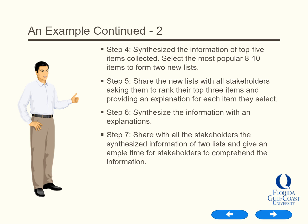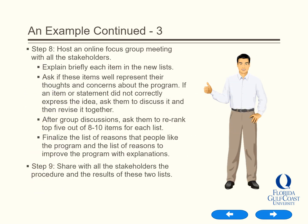Step 7: Share with all the stakeholders the synthesized information of the two lists and give ample time for stakeholders to comprehend the information. Step 8: Host an online focus group meeting with all the stakeholders. Explain briefly each item in the new lists and ask if these items well represent their thoughts and concerns about the program. If an item or statement did not correctly express the idea, ask them to discuss and revise it together. After the group discussion, ask them to re-rank the top 5 out of 8 to 10 items for each list.